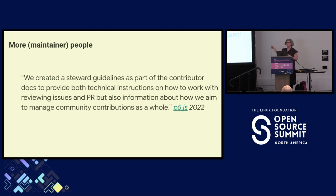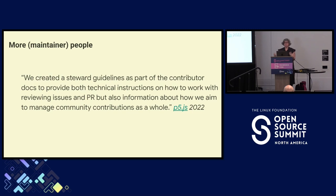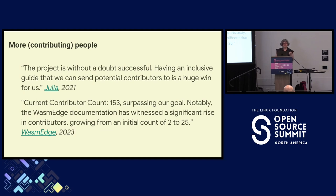Colibri had a great project working on strings for translation, and they got immediate feedback from their translator community. Now they've got people who are able to help contribute translations because they did this string analysis project. And of course, giving people better alignment with the processes and ethos behind a project — P5.js created steward guidelines about what it means to be a good maintainer: not just technical instructions for reviewing issues and PRs, but how they aim to manage their community as a whole. Having an inclusive guide to send to contributors is a huge win. The WasmEdge project grew their contributor count as well.